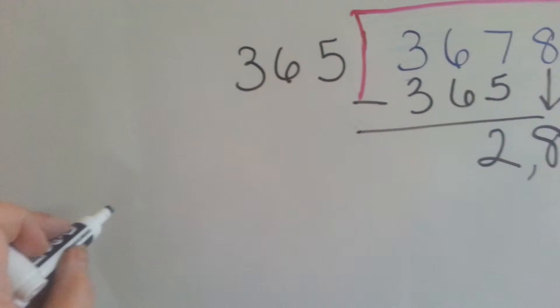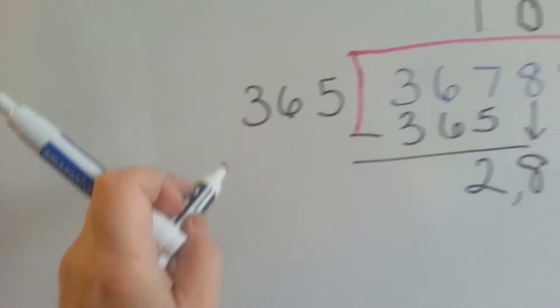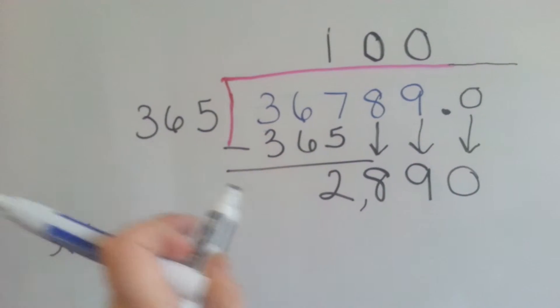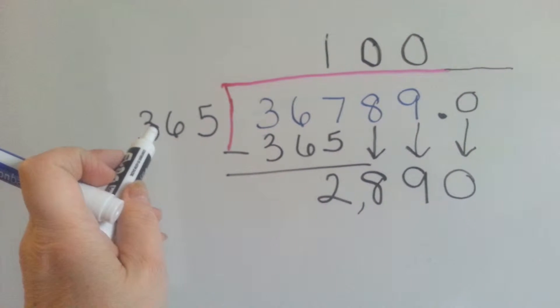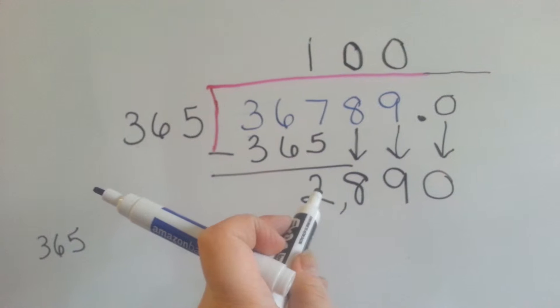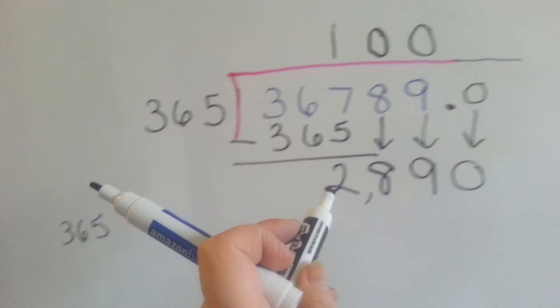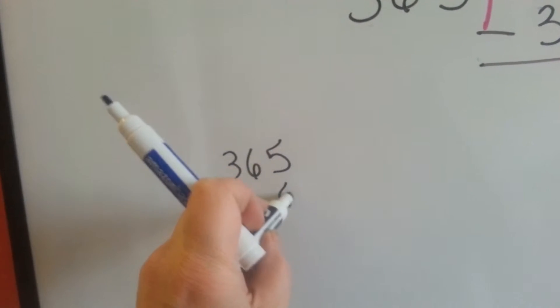So we can do a little math on the side. 365 is about, what, 3 of them in 1,000? And we've got 2,800. So I'm going to guess 6, I'm going to guess 8. I'm going to multiply by 8. That's my guess.